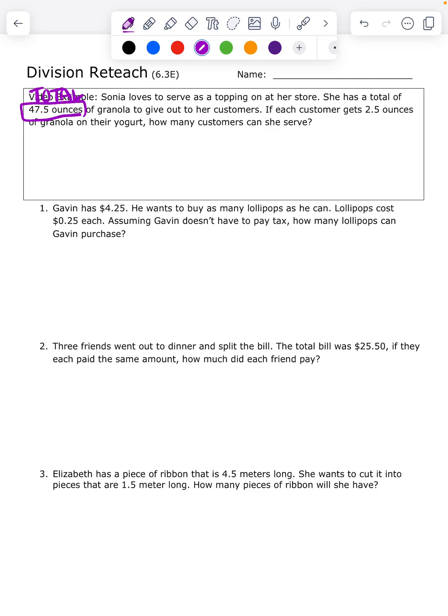And the good news is anytime we have total, we are dividing. So they already have told us we're dividing just by knowing that it is the total. Again, I knew it was the total because it told me so. Then it says if each customer gets 2.5 ounces of granola on their yogurt, how many customers can she serve?